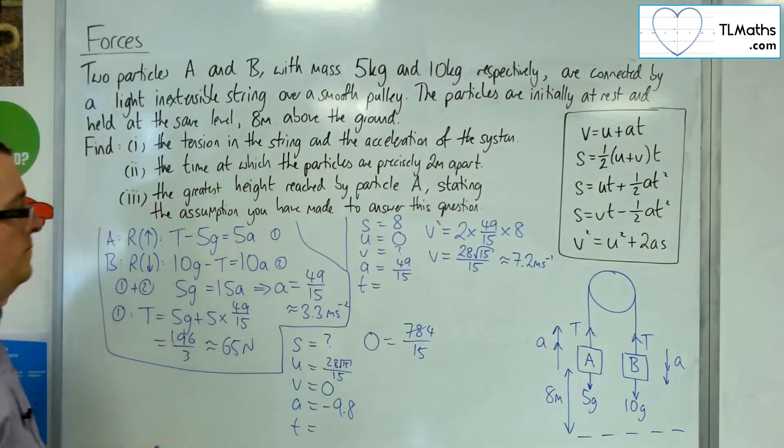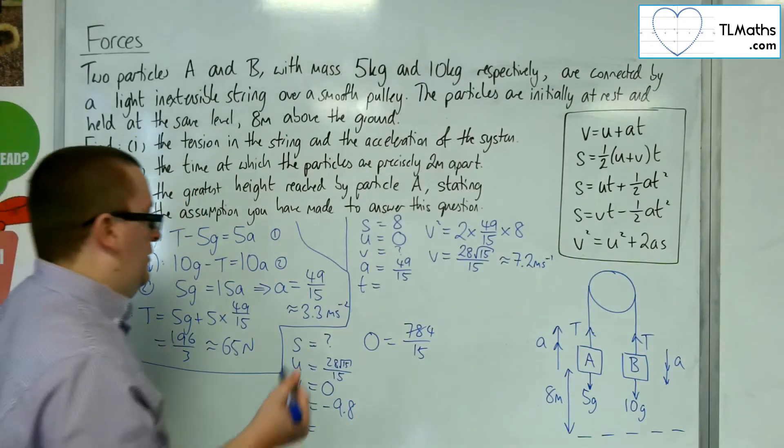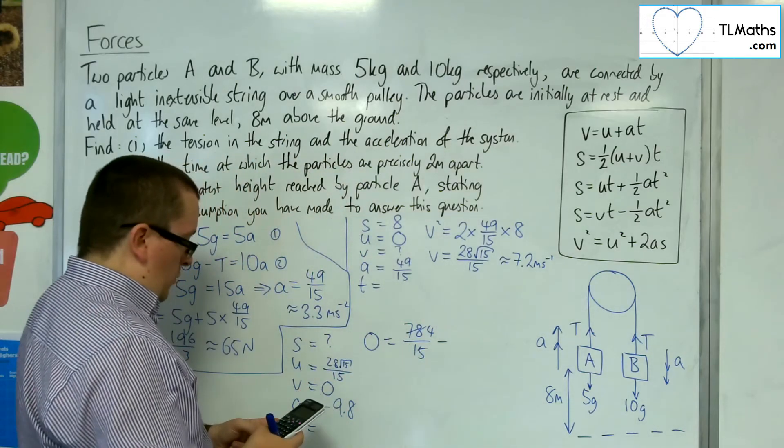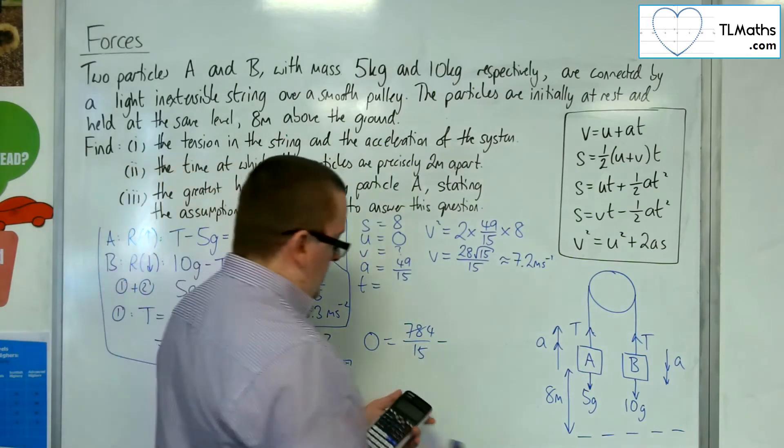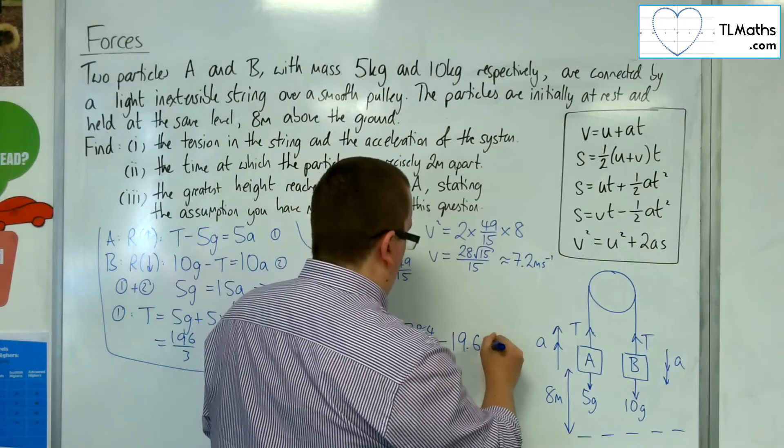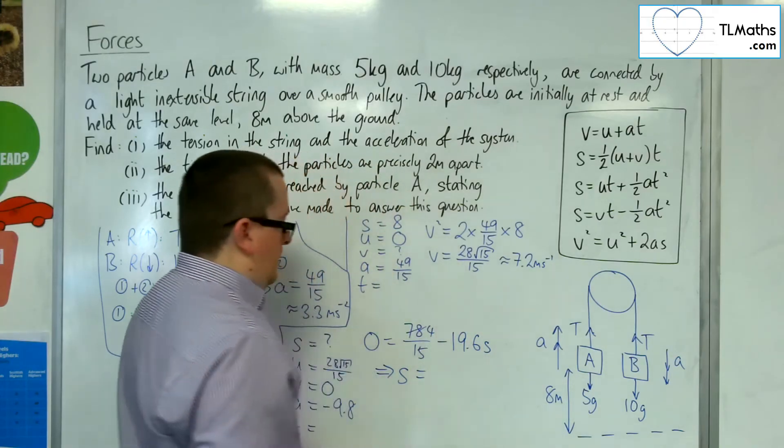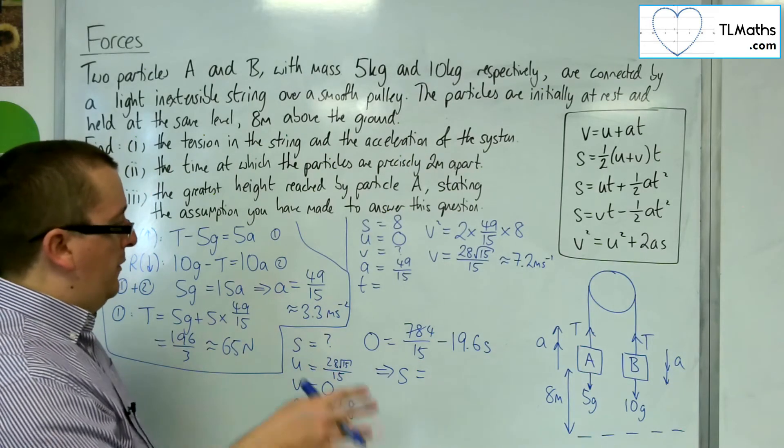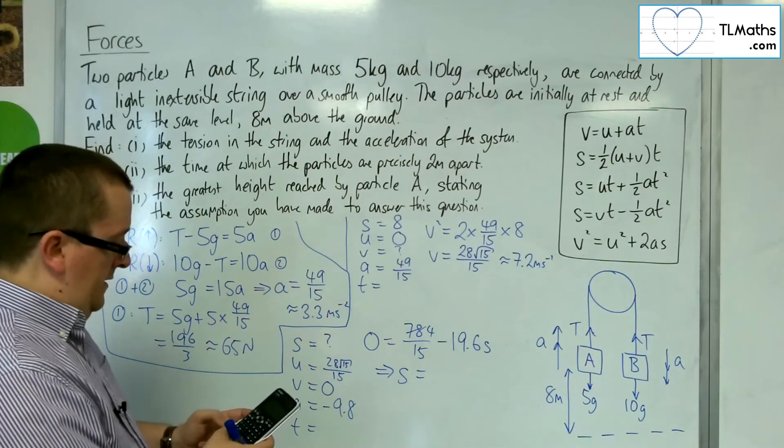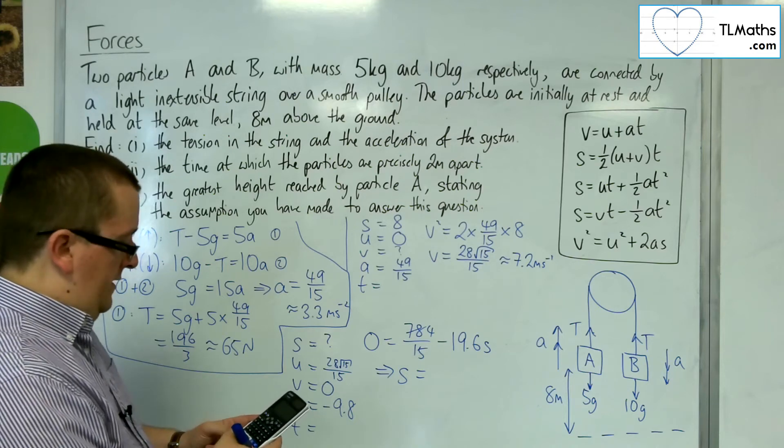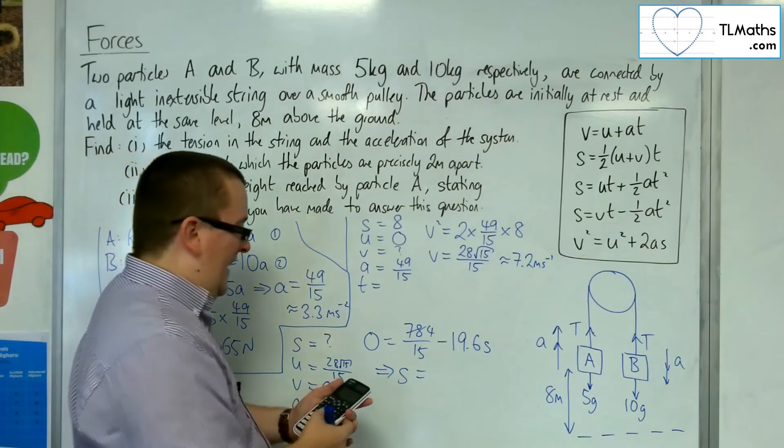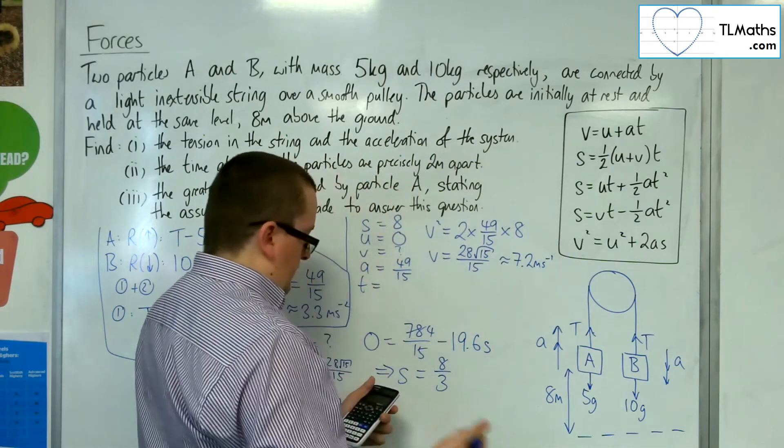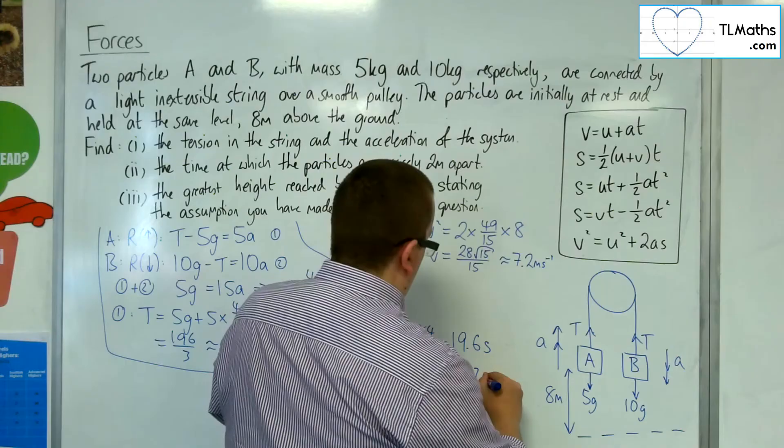okay. So, that's the U squared, plus 2 lots of A S. So, take away, so 2 lots of 9.8 is 19.6 S. So, if we add the 19.6 S to both sides, then divide both sides by 19.6, 784 over 15 divided by 19.6 is 8 thirds. So,